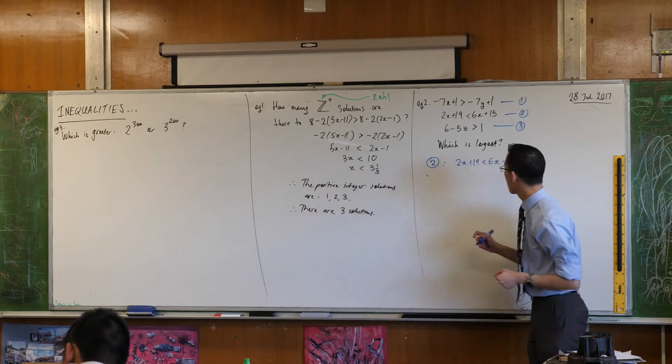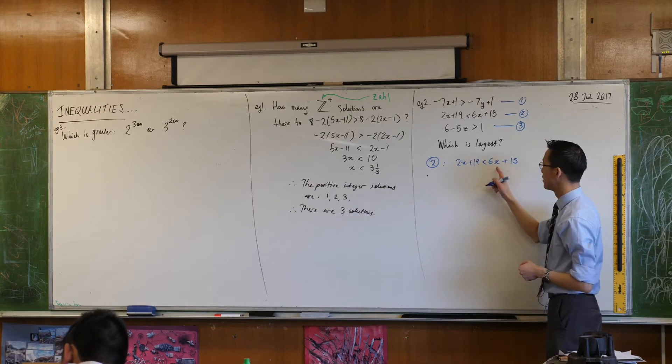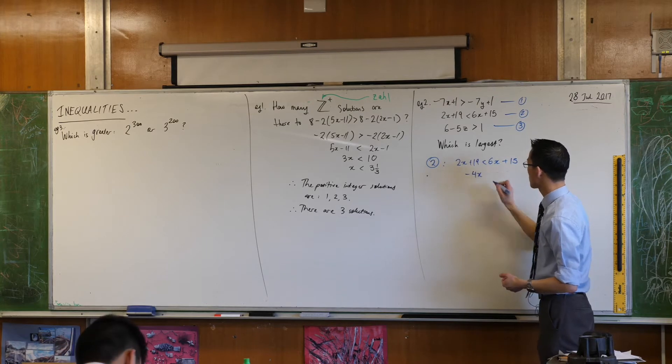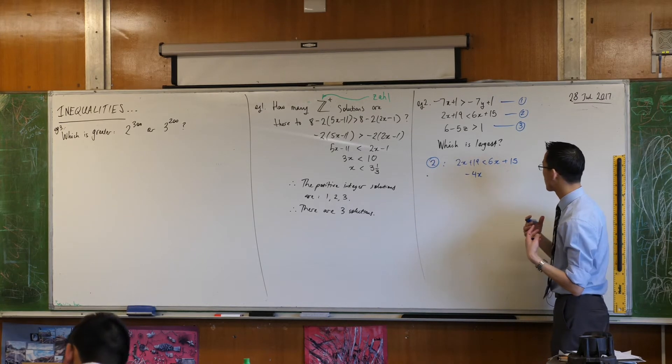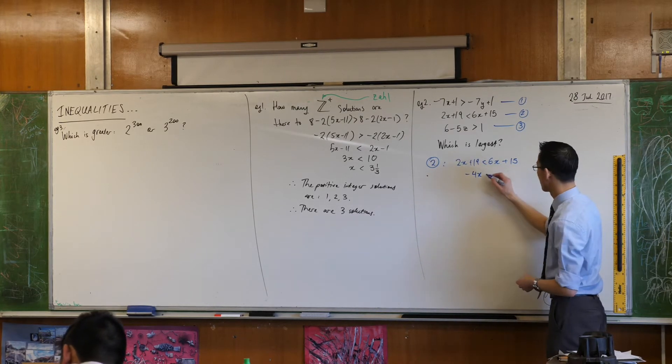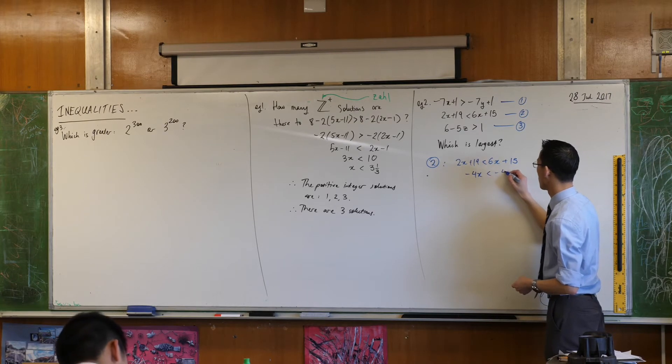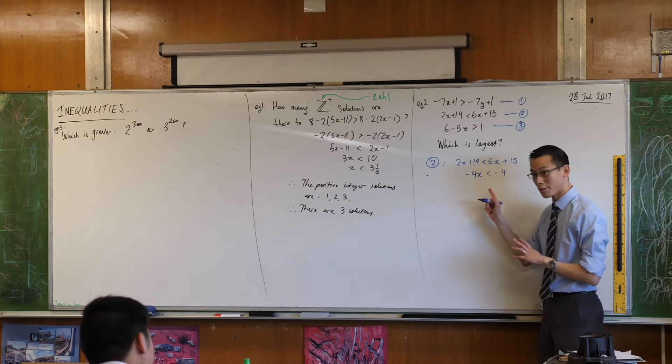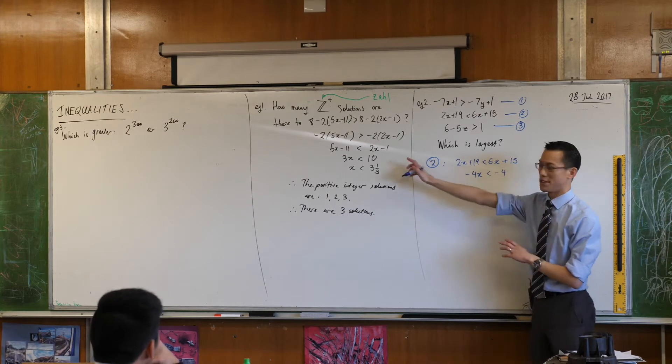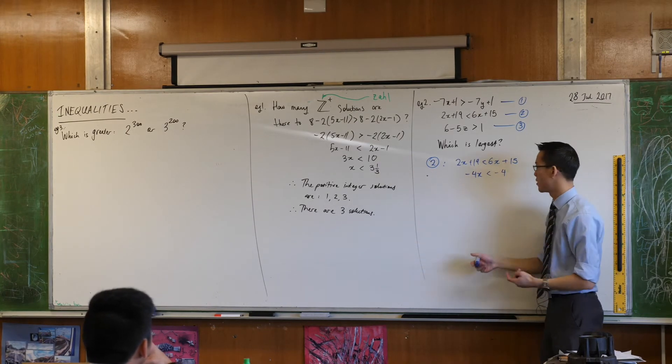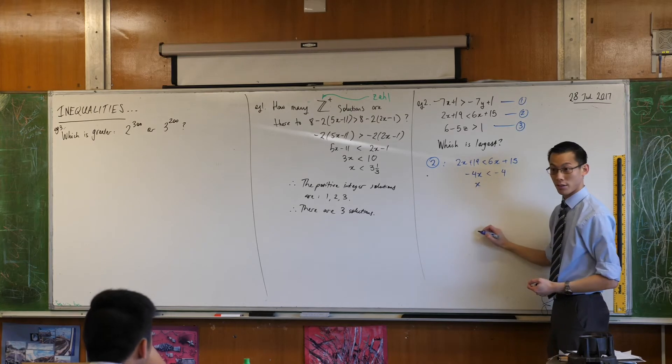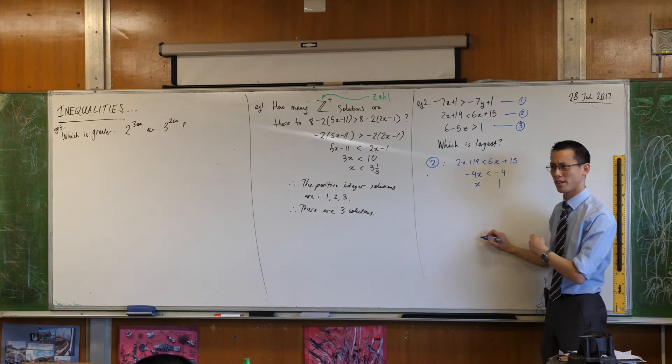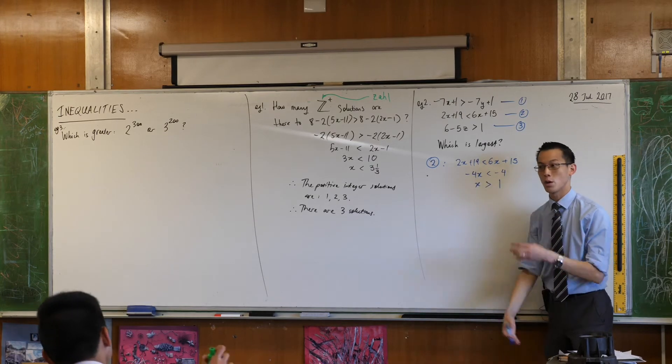Inequality two though, it's not too bad. You can see I can subtract 6x from both sides, which would leave me with this. I can subtract 19 from both sides, which would leave me with this. How does that look? Are you comfortable with that? At this point I've already seen before I'm going to divide by a negative number, namely negative four, so that leaves me with this. But what happens to the inequality? Fantastic, so it's flipped around.